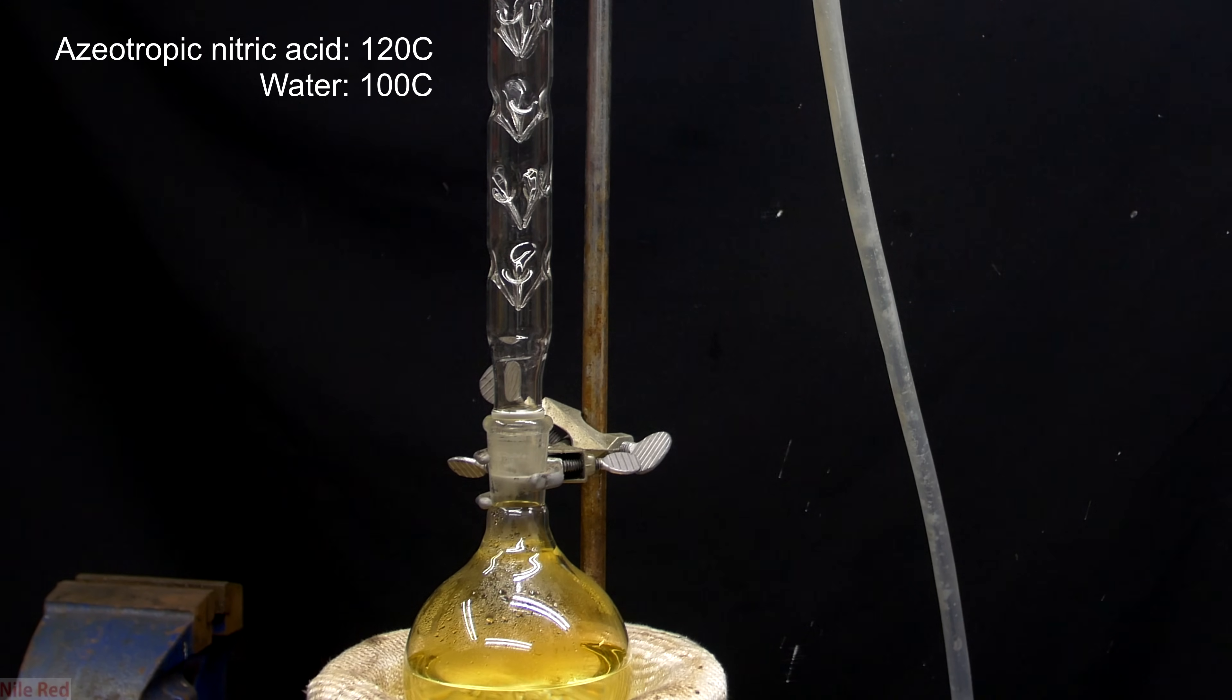The azeotropic nitric acid is less volatile, so it condenses and falls back into the reaction flask. Once the excess water is being removed, the azeotropic nitric acid can make it to the top of the column and distill over.